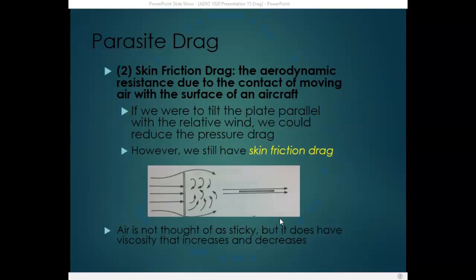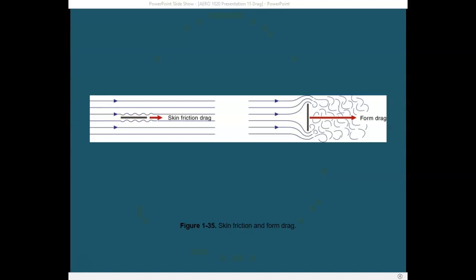The next type of parasite drag is skin friction drag — the aerodynamic resistance due to the contact of moving air with the surface of an aircraft. If we take that flat plate and tilt it parallel to the relative wind, we reduce pressure drag, but there would still be skin friction drag because air has viscosity. We don't normally think of air as viscous or sticky, but it does have viscosity, and that viscosity increases and decreases.